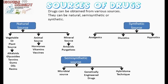Coming to synthetic sources of drugs: several drugs are obtained from synthetic sources as the techniques involved are cheaper and easier, and the drugs produced are safer and of good quality. Some examples of synthetic drugs are analgesics, diuretics, and hypnotics.